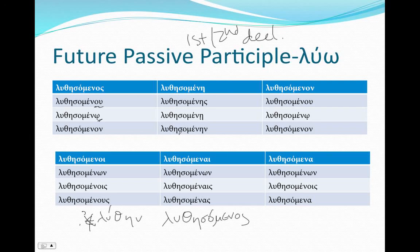One thing to keep in mind is that middle and passive participles will always have this -omenos ending. The only thing that is going to differ is what stem you add it to.